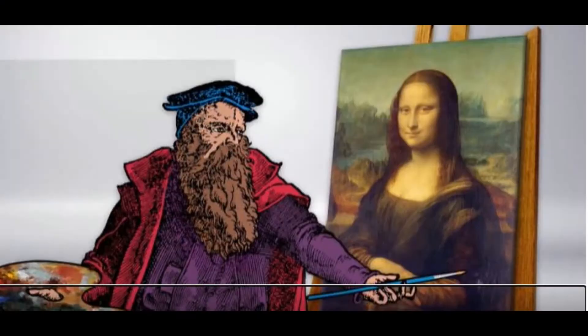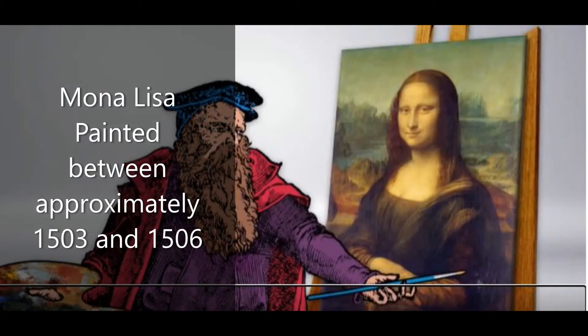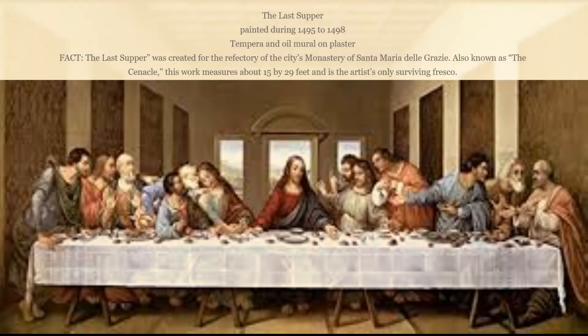These are some of the most famous works of art in the world — not just the city, the world. This is the famed Mona Lisa, painted by Leonardo da Vinci between approximately 1503 and 1506. This is The Last Supper, painted during 1495 to 1498. It was painted by tempera and oil, and it's a mural on plaster.